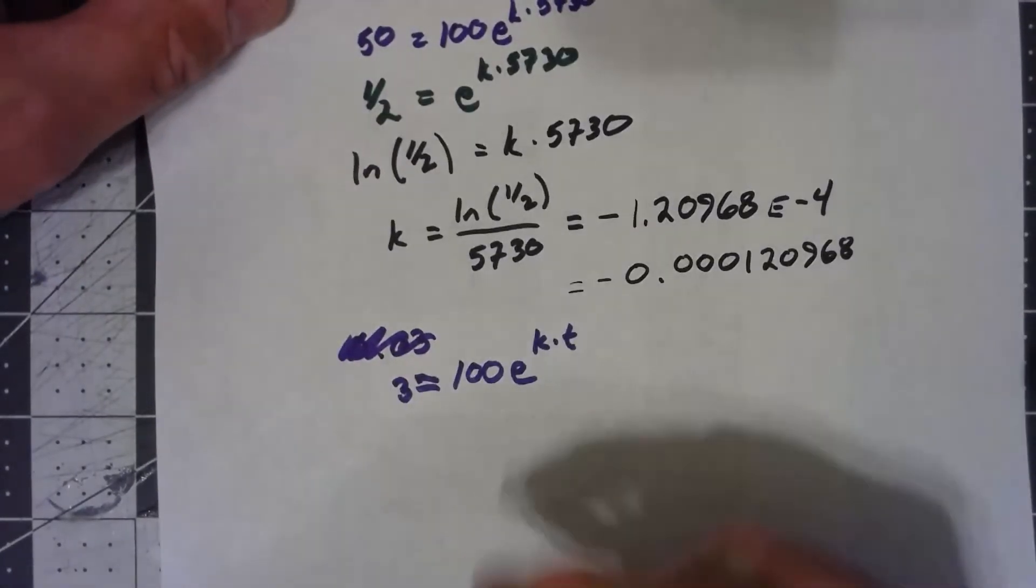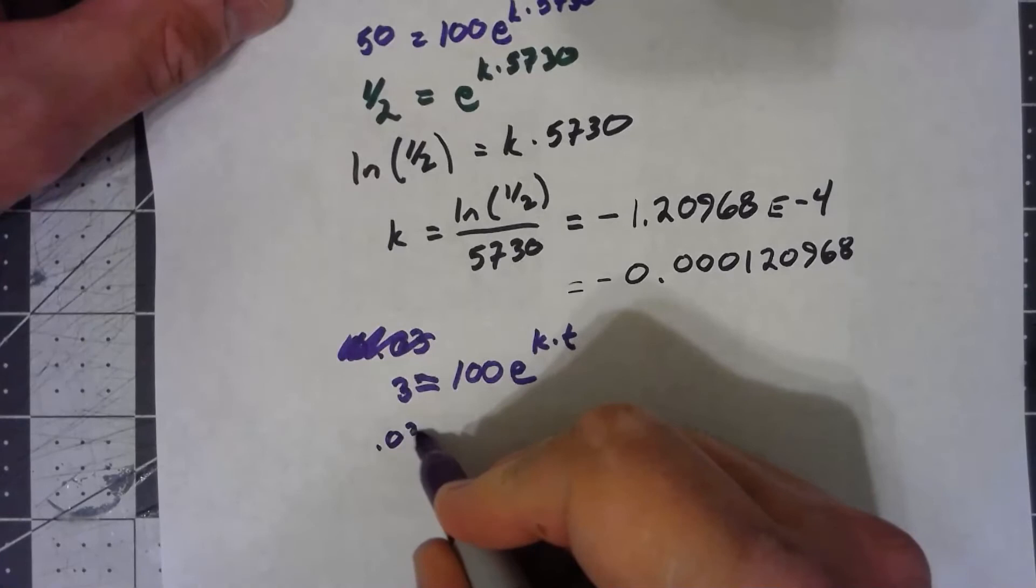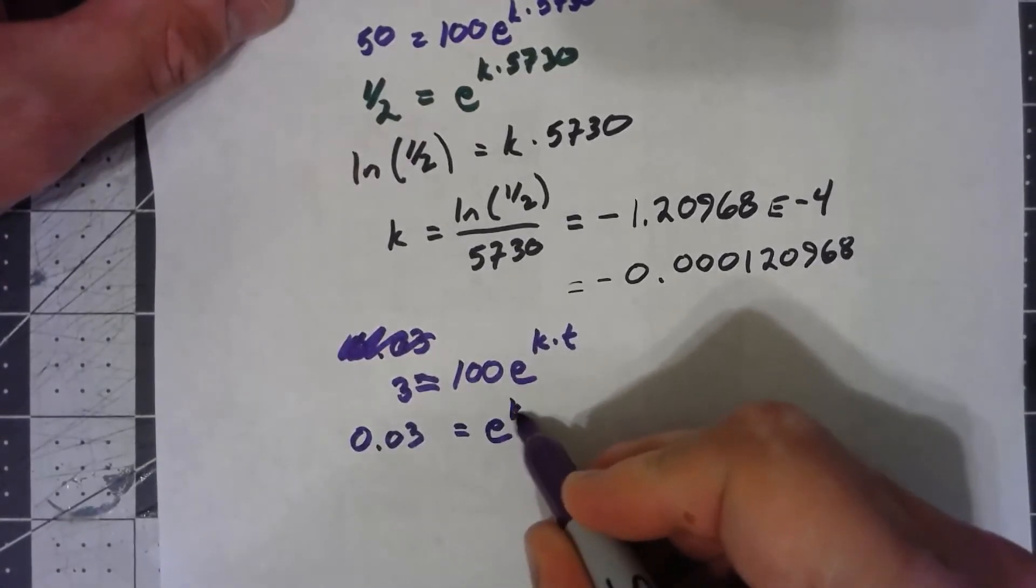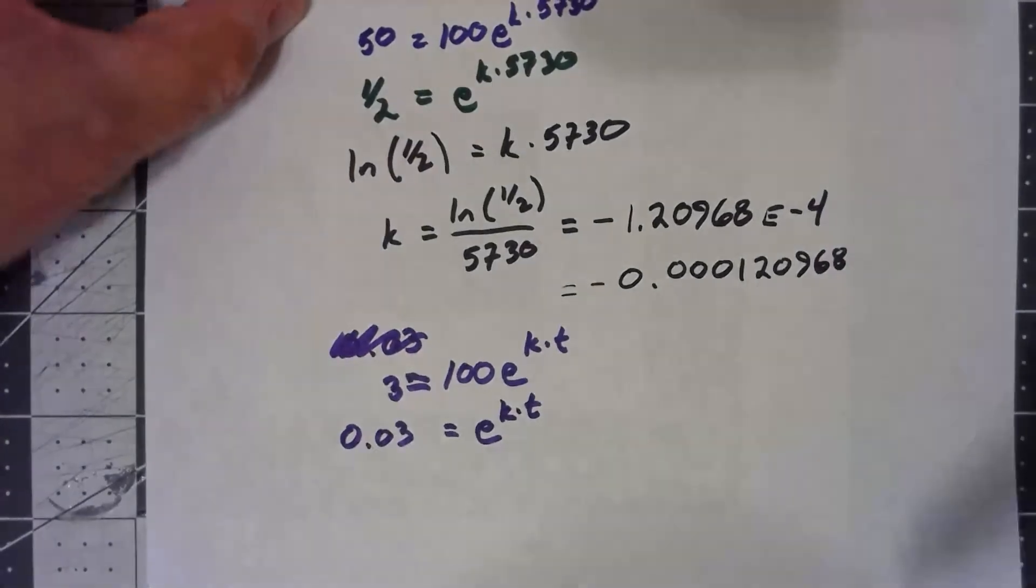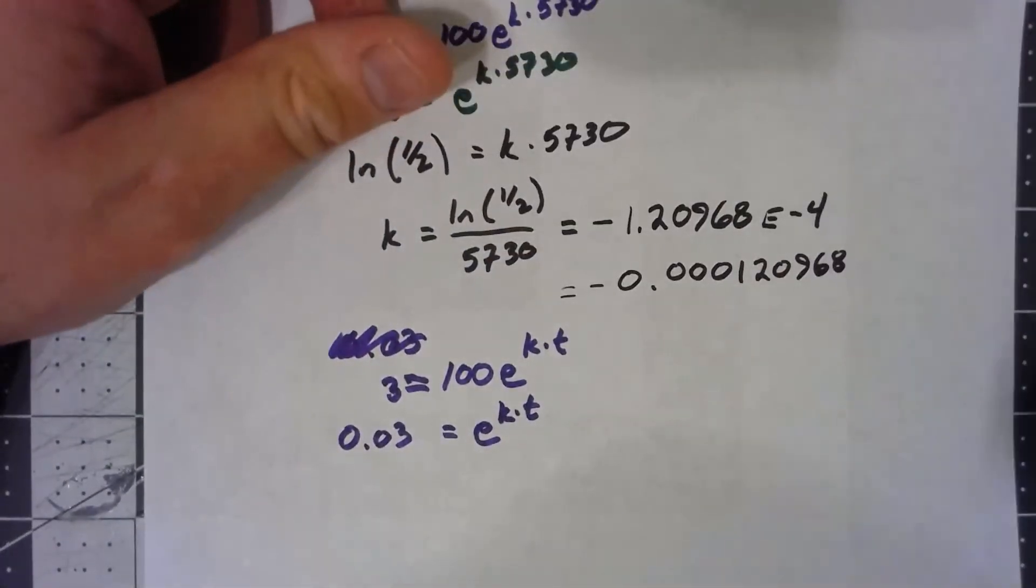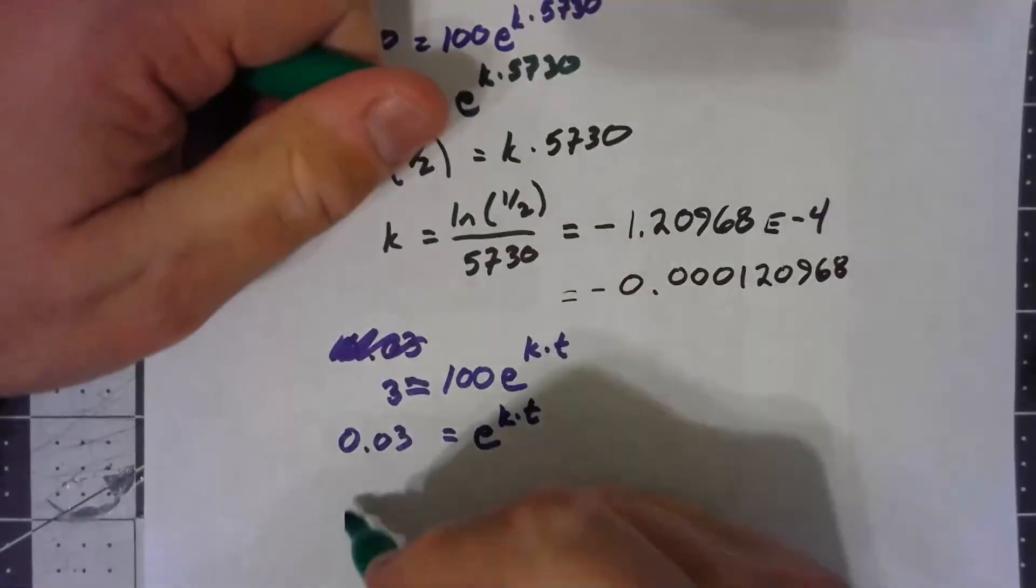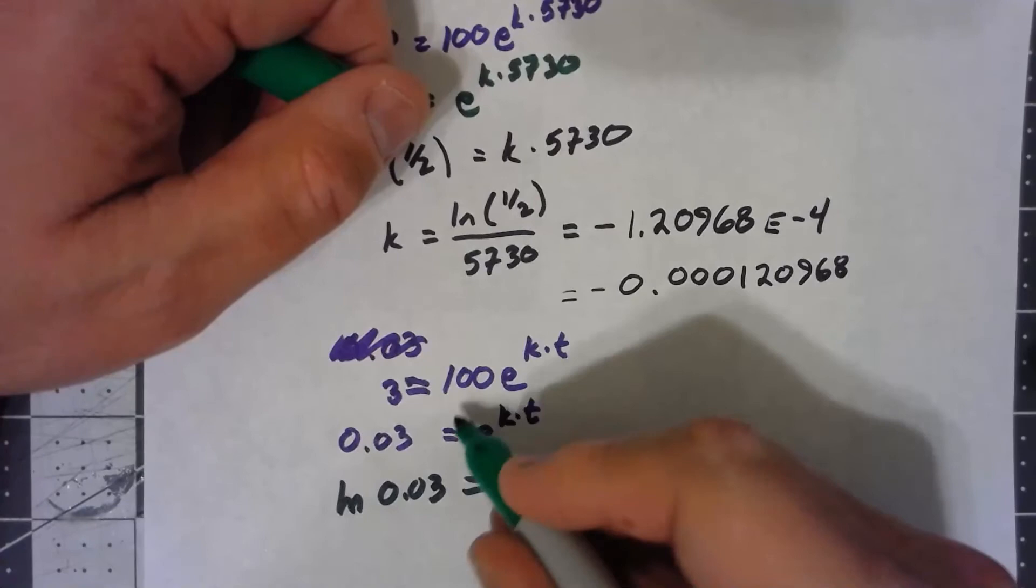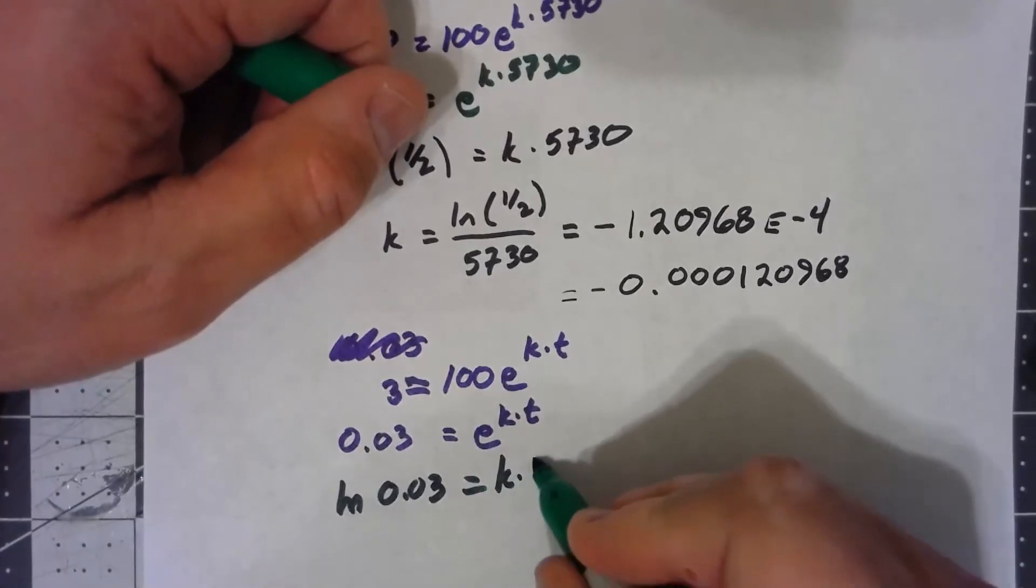So I'll divide both sides by 100. That's the 0.03 that I was starting to write down, is e to the kt. I can take the natural log of both sides. So the natural log of 0.03, natural log cancels out the e, I've got K times T.